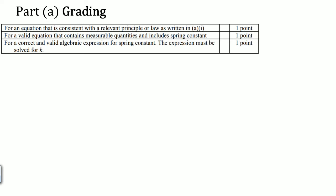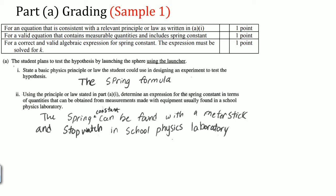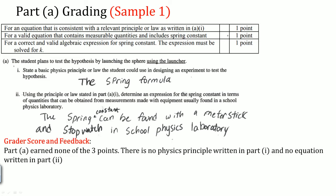Let's look at some potential answers. In sample one, the student wrote that the basic principle was the 'spring formula,' and stated the spring constant can be found using a meter stick and a stopwatch in a school physics lab. In grading this: the 'spring formula' doesn't count as a stated principle, and there is no equation written, so the graders say this earns no points.